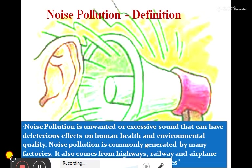Due to the advancement of science and technology, today we can see a number of vehicles on the road. The volume of the horn of each vehicle is not monitored by anyone. People are not worried about other people's health and their conditions. There are a number of different types of horns being used. Sometimes people are not able to identify whether it is a horn or an animal sound.